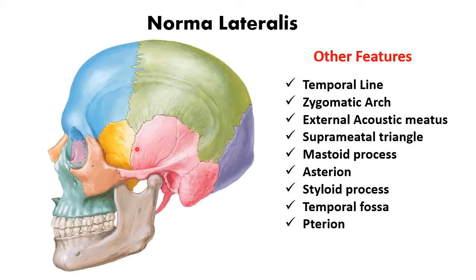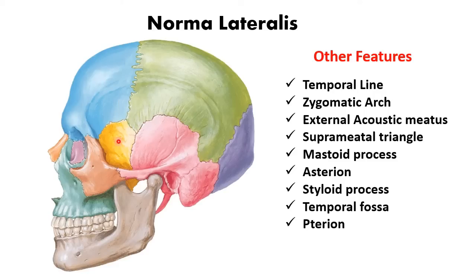The pterion is the H-shaped area where four bones meet: the frontal bone, parietal bone, sphenoid bone, and the squamous part of the temporal bone. This point is situated four centimeters above the midpoint of the zygomatic arch. An injury at this point can injure the anterior division of the middle meningeal artery.